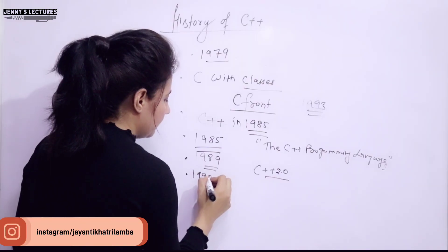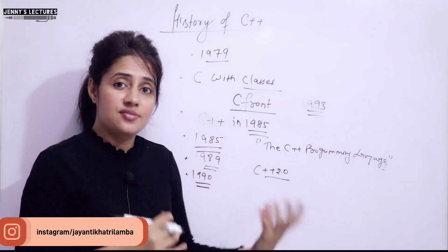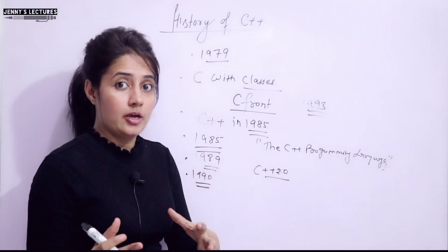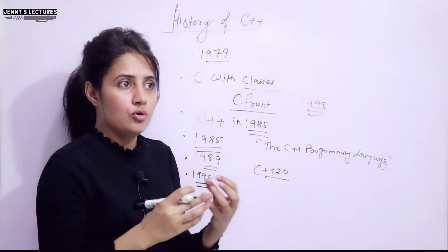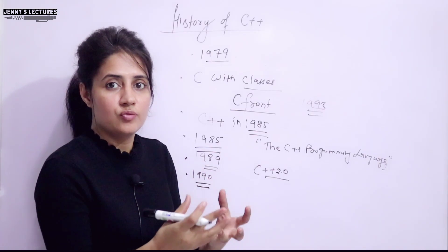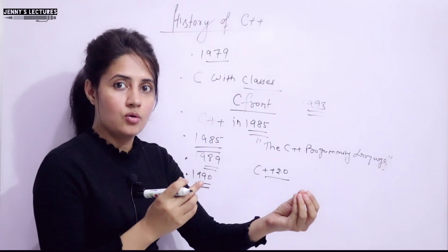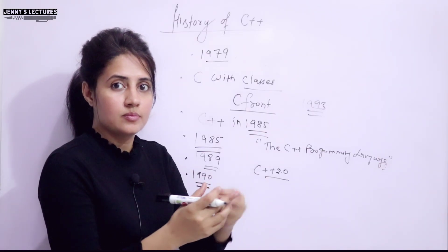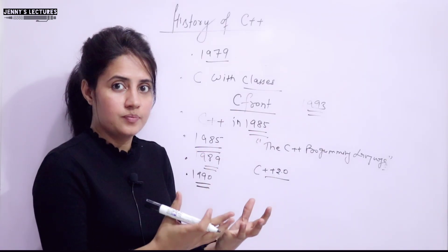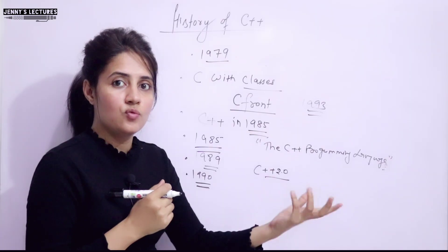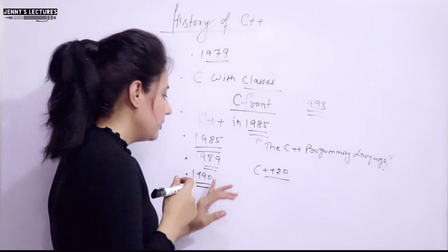Then in 1990, the annotated C++ reference manual was released. I hope you know the meaning of annotated. It means like to add a description or to add some information, a piece of information to a data or an image to describe about that image or that data. Some you can say notes, these kind of things. So, that reference manual was released in 1990.